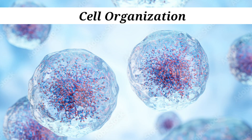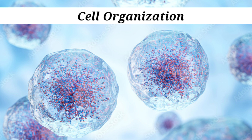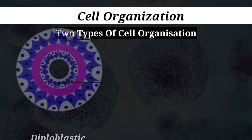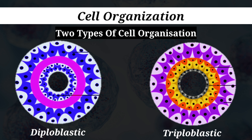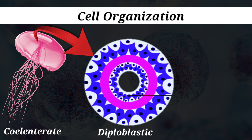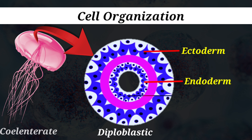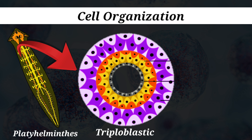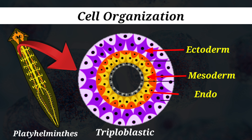Cell organization is the next feature used for classification. There are two types of cell organization: diploblastic and triploblastic. Cnidarians have diploblastic organization, where the germinal layers of the cell consist of an external ectoderm and an internal endoderm. Members from phylum platyhelminthes to chordates have triploblastic organization, where a third germinal layer, the mesoderm, is found between the ectoderm and the endoderm.